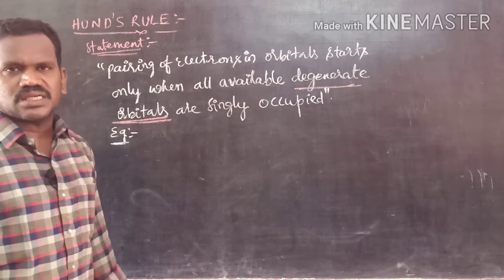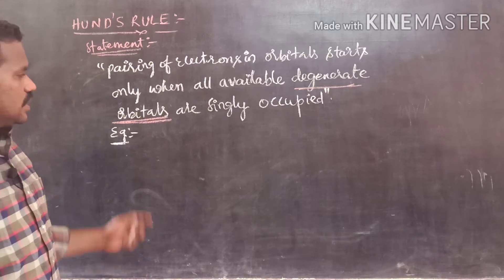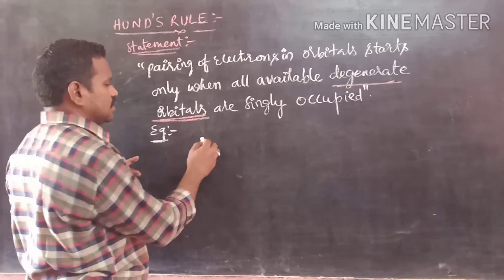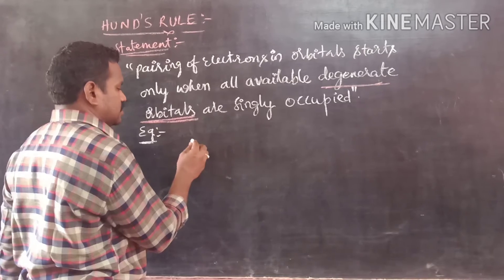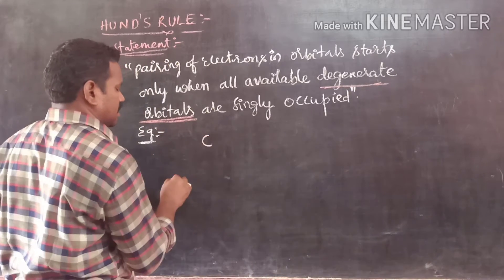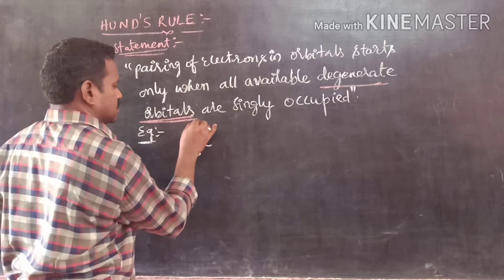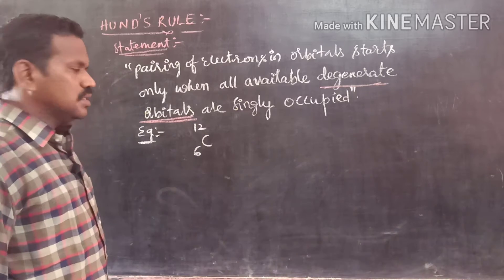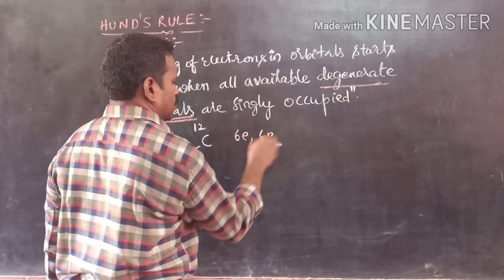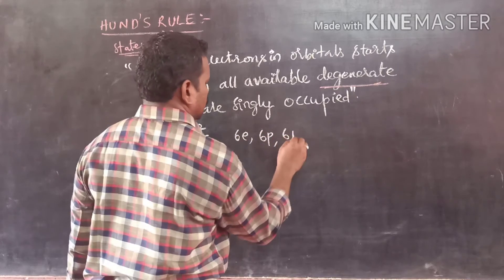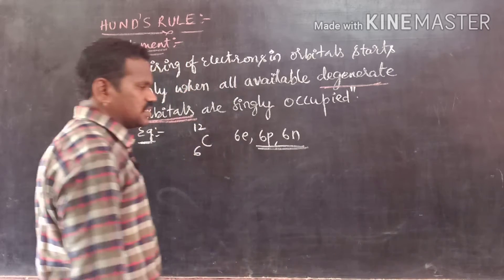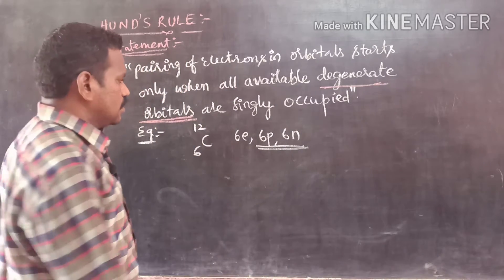There is a little bit of confusion in the statement, so to clarify it, we will write the electronic configuration of some elements. For example, the general representation of carbon is C-6-12. This contains 6 electrons, 6 protons, and 6 neutrons — the protons and neutrons are present inside the nucleus.